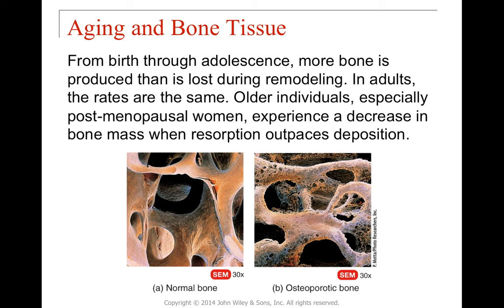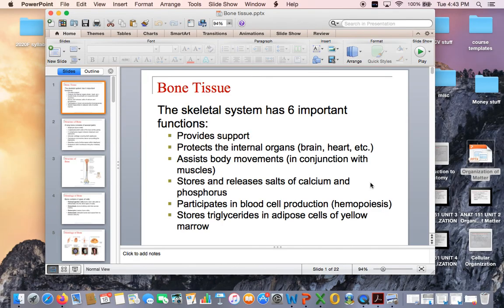Regarding aging and bone tissue — the balance between osteoblasts and osteoclasts shifts over time. During youth and adolescence, more bone is produced than lost during remodeling. As we age, resorption begins to exceed deposition, leading to conditions like osteoporosis. An osteoporotic bone has very large holes and gaps, unable to maintain weight. In fact, elderly individuals often break their hip first and then fall — the bone simply can't carry the weight. Thank you for listening. Aloha and happy studying.